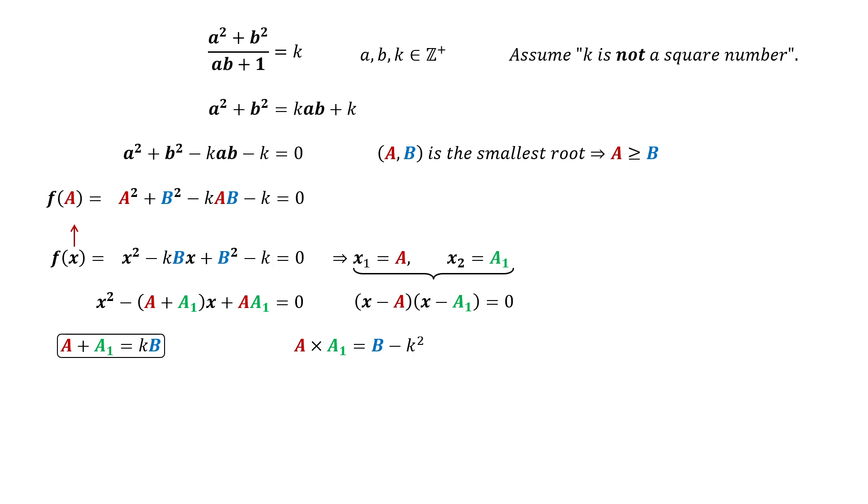Now, we will consider the nature of A1. From the first equation, we get A1 equal KB minus A, which is an integer because KB and A are integers. From the second equation, we also get A1 equal to B square minus K over A.